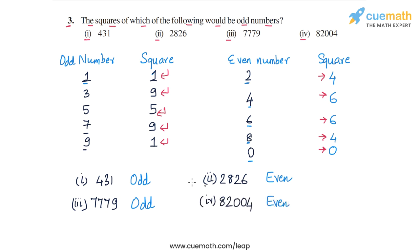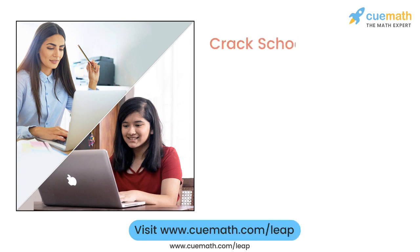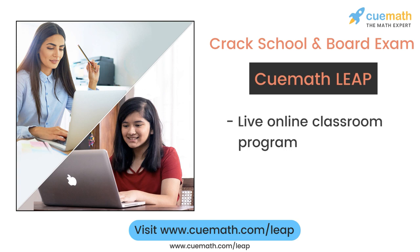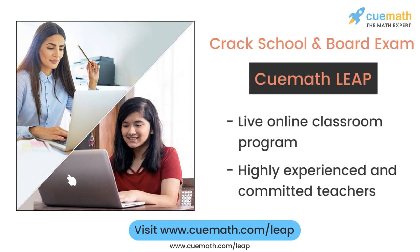So the numbers for which the squares will be odd are parts one and three. This completes question number 3. To learn more about how Q Math can help you crack school and board exams, explore Q Math Leap — a live online classroom program run by highly experienced and committed teachers.